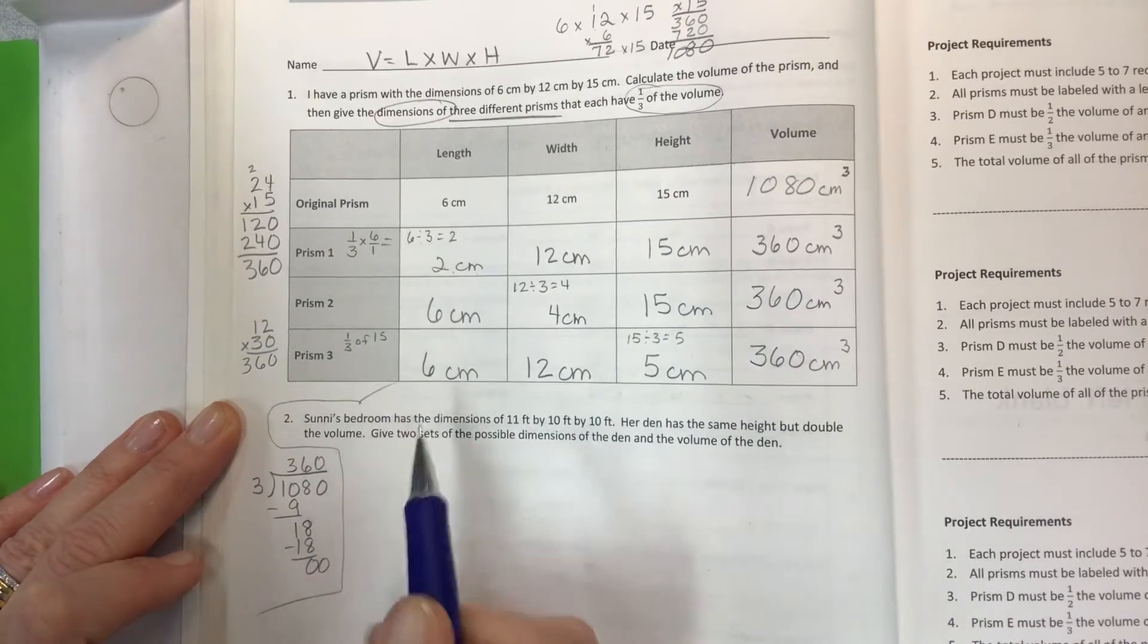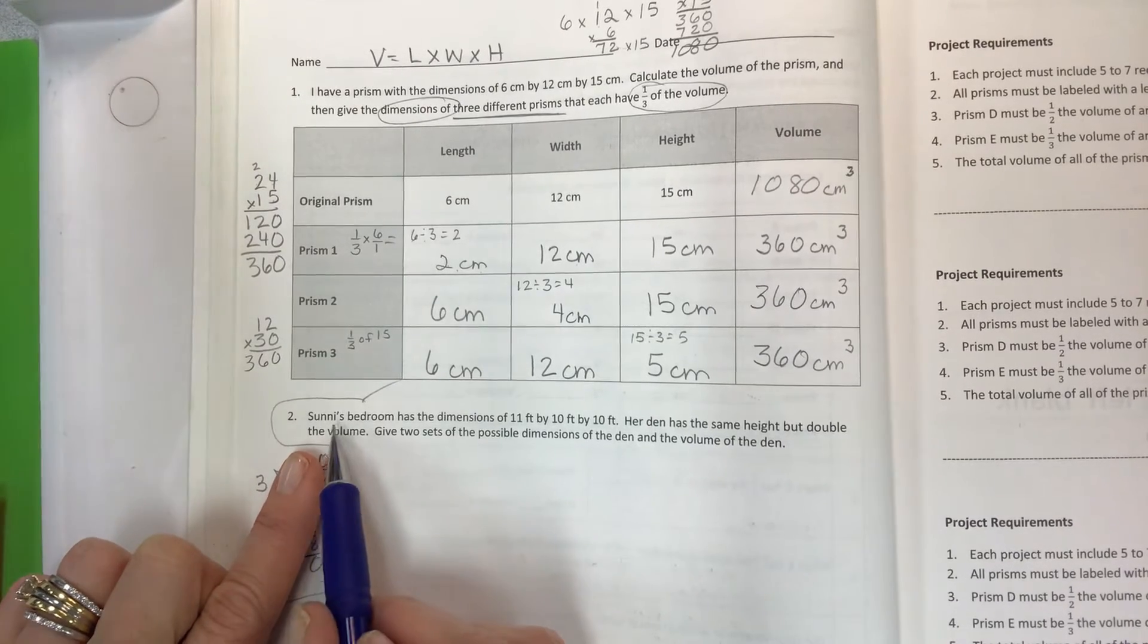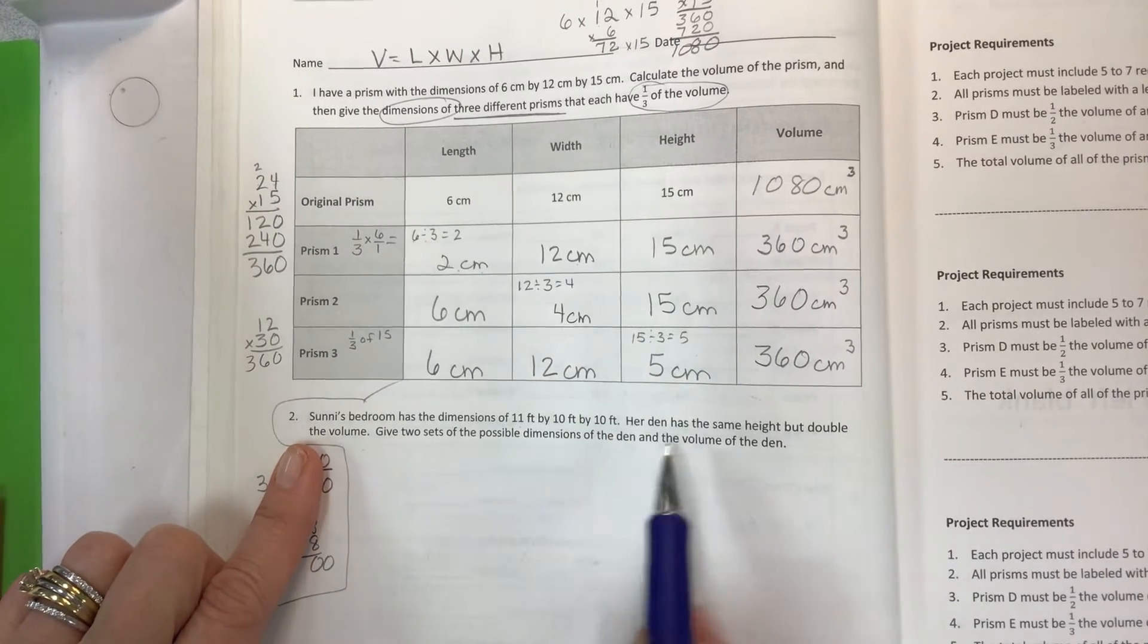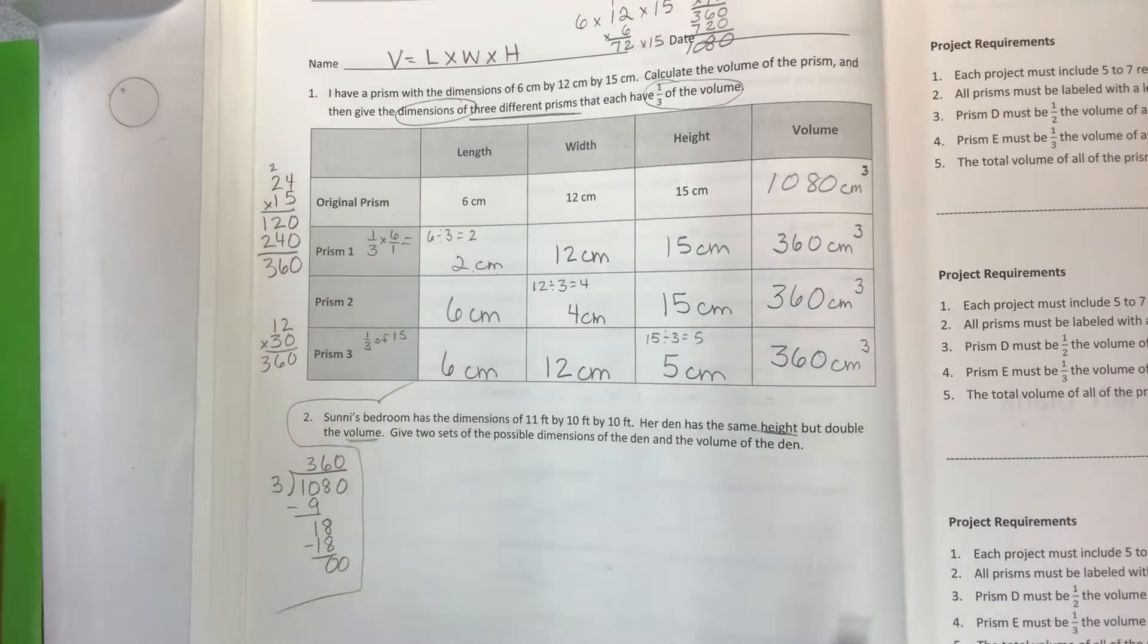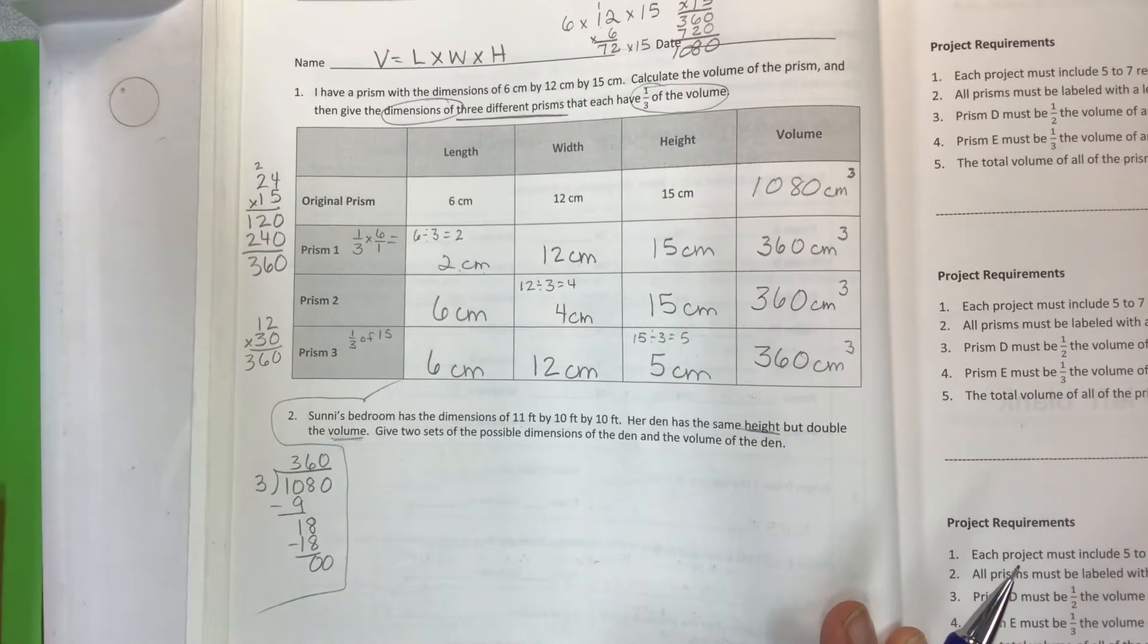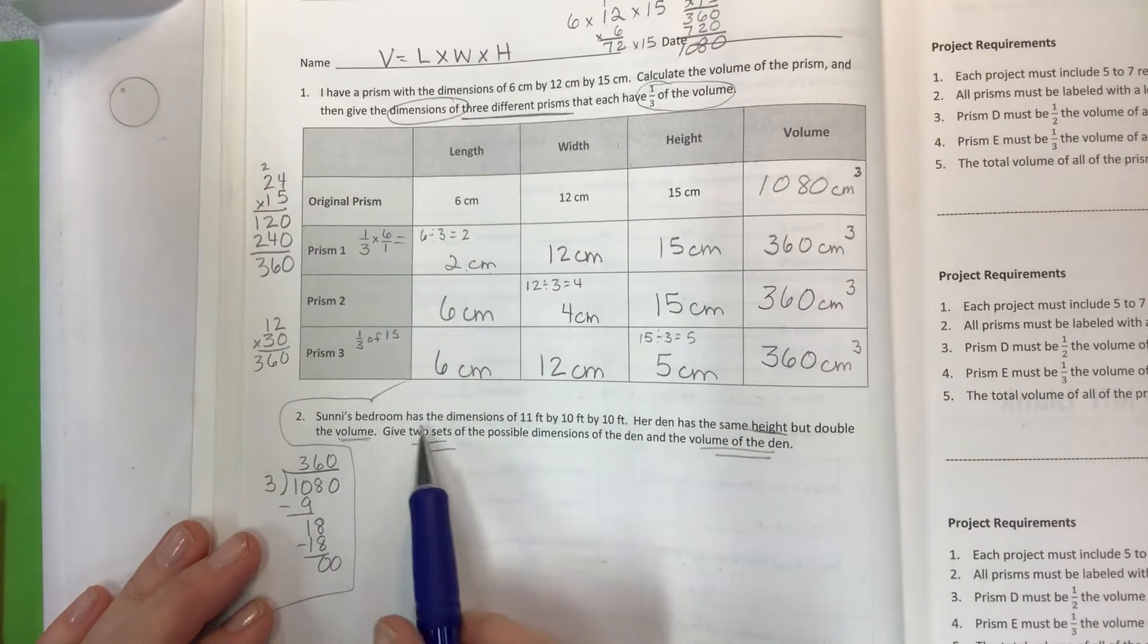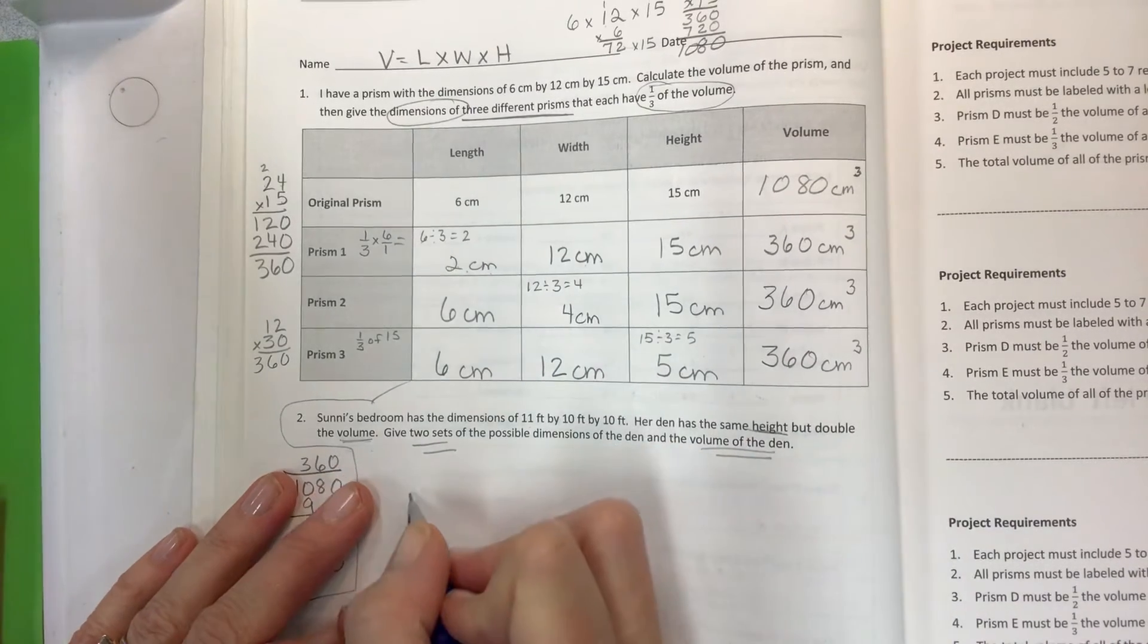Okay, take that out of this problem. Next one: Sunny—or Suny, I don't know how you would read that—but let's call this person Sunny. Sunny's bedroom has the dimensions of 11 feet by 10 feet by 10 feet. Her den has the same height but double the volume. Give two sets of possible dimensions of the den and the volume of the den. So we have to give two sets and the volume. We look at her bedroom and we've got 11 by 10 by 10.